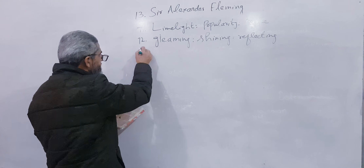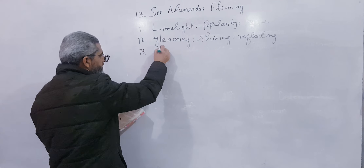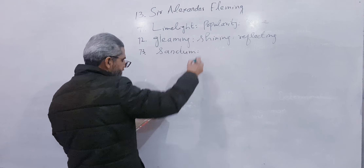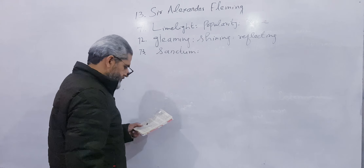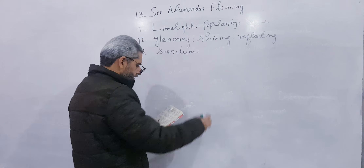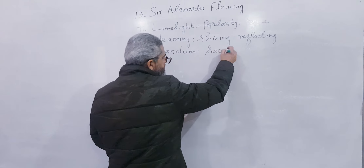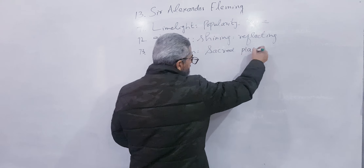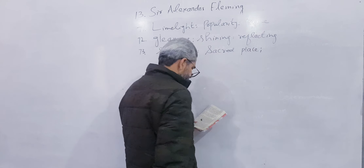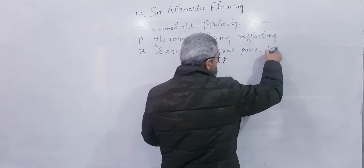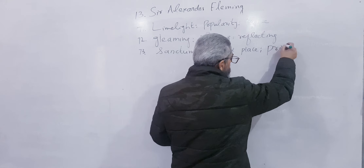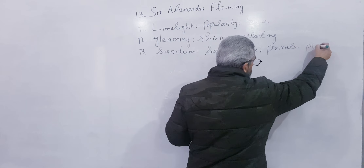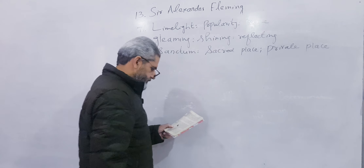Number 73: Sanctum. Sanctum means a sacred place — muqaddas jagah. Or write private place.